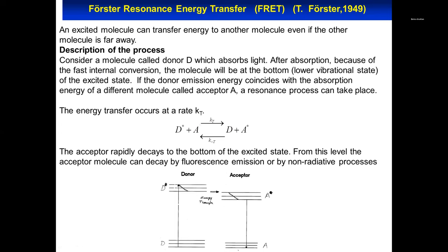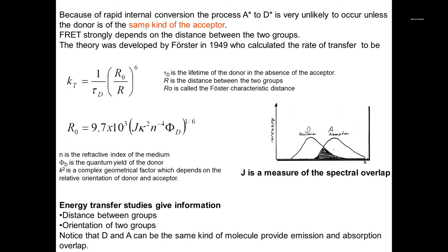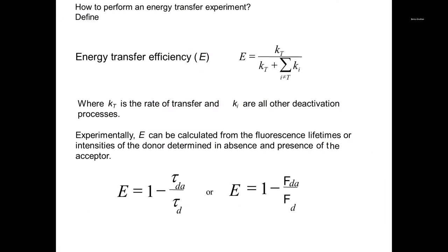I won't go through the Förster derivation, but the emission of the donor and the absorption of the acceptor must overlap in a certain way. One important thing about the measurement of energy transfer is that it can be measured either by lifetime or by fluorescence.